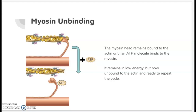The myosin remains bound to the actin until an ATP molecule finds its way to the myosin and binds to it. This allows the myosin to release the actin. It remains in low energy configuration and is ready to repeat the cycle again.